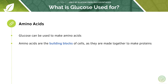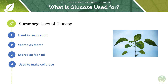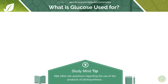To summarise, there are various uses of glucose. Number one, glucose can be used in respiration to provide ATP as energy for the cell or for the plant. Glucose can be stored as starch, it can be stored as lipids in seeds, it can be used to make cellulose for the cell wall, and it can be used to build amino acids. The examiners often ask questions regarding the use of the products of photosynthesis, so this summary is where easy marks come from — make sure you commit that to memory.